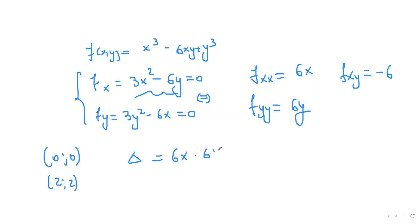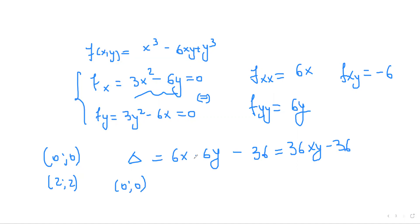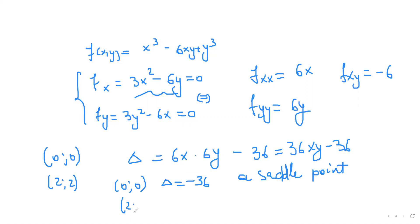Let's analyze the first point (0, 0). Substituting into our delta expression, we get delta equals 36·(0)·(0) minus 36 equals negative 36. Since delta is less than zero, the point (0, 0) is a saddle point — not a local extreme point.